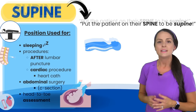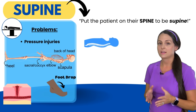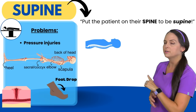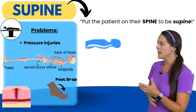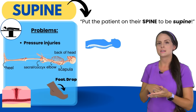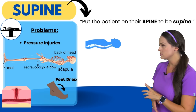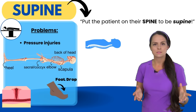Unfortunately, problems can arise with this position, especially if your patient can't move around and shift their weight. The problem is pressure injuries, also known as pressure ulcers. Everywhere there's a bony prominence, there's a risk for skin breakdown because that bony prominence is putting pressure on the skin against the surface the patient is lying on. Key areas to watch are the heels, ankles, sacral and coccyx area, elbows, scapula, and back of the head. Immobile patients are also at risk for foot drop.